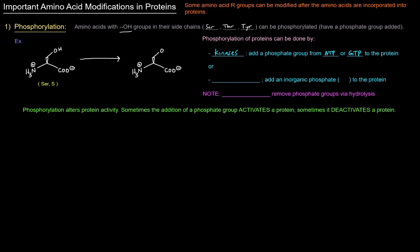Phosphorylation can also be done by phosphorylases. The difference between them and kinases is that phosphorylases add an inorganic phosphate which is just a free phosphate group to the protein. And just as a note there are enzymes that can remove those phosphate groups and they are called phosphatases. They can remove phosphate groups via hydrolysis.